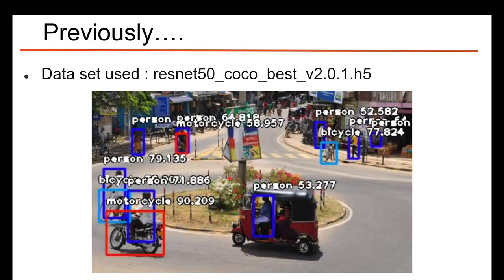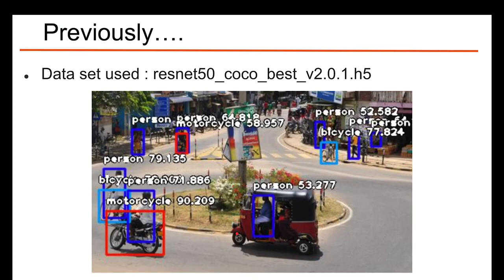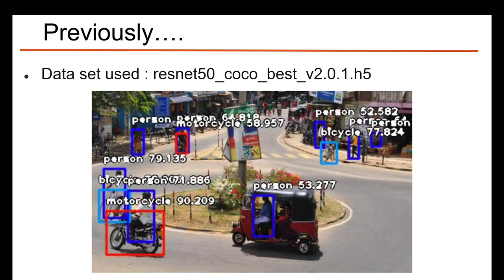In our previous video, we used the ResNet-50 COCO-based pre-trained model to detect a few objects. As you can see in this image, we were able to detect most objects in this street view, but the system did not detect the tuk-tuk. The reason is the ResNet COCO-based model is not trained with tuk-tuks, so it doesn't recognize it — it even detects the person inside the tuk-tuk but not the vehicle itself.